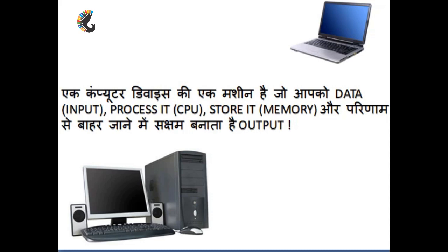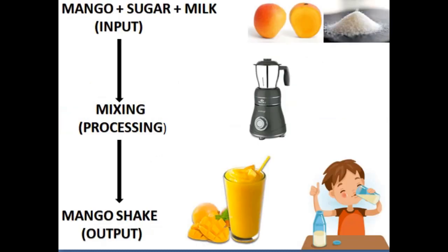Now let's look at an example. We can take mango, sugar, and milk — these three things are our input. And we have a mixer to process the material.